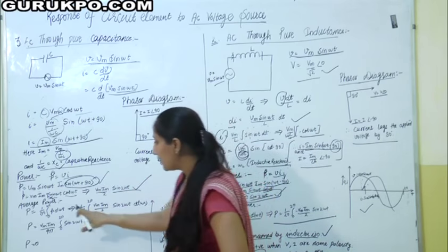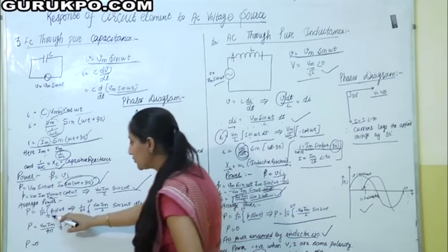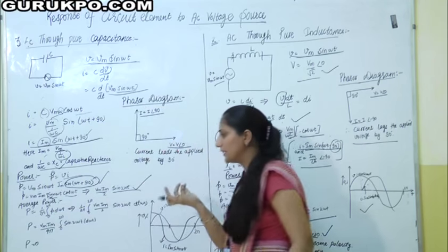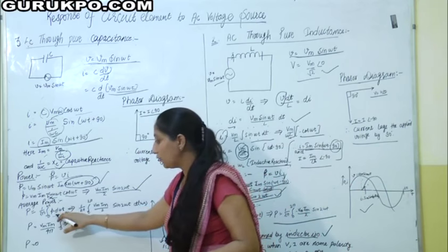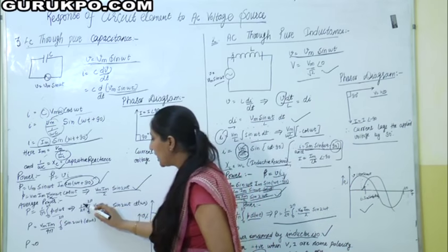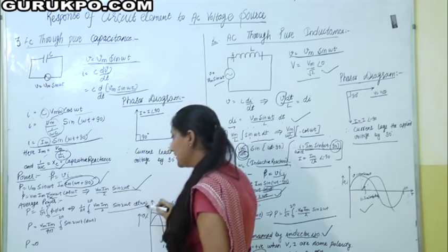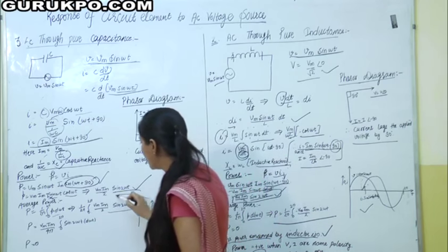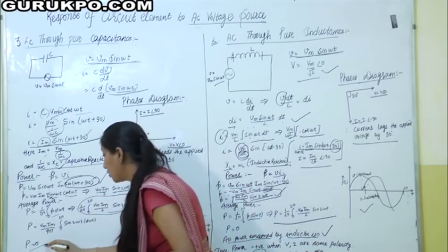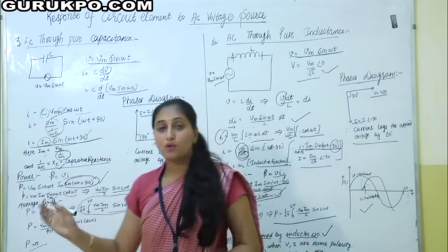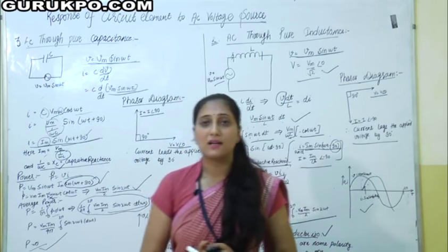Now we calculate average power. Average power equals (1/2π) × integral from 0 to 2π of instantaneous power d(ωt). Putting the instantaneous power value in: (1/2π) × integral from 0 to 2π of (Vm × Im / 2) × sin(2ωt) d(ωt). Integrating and solving this term, the value equals 0. So our average power across a capacitor is zero.